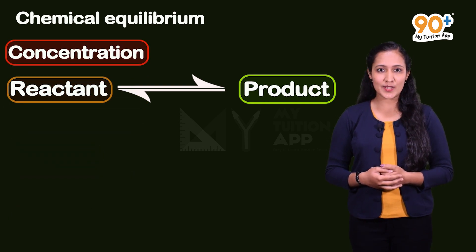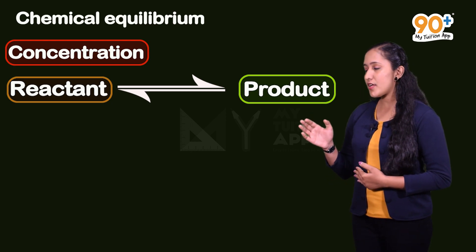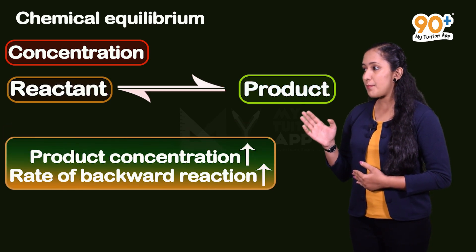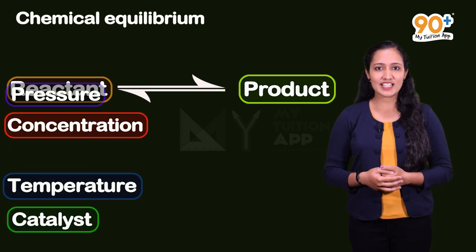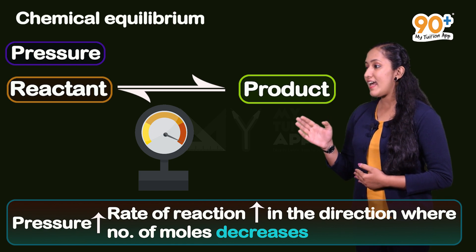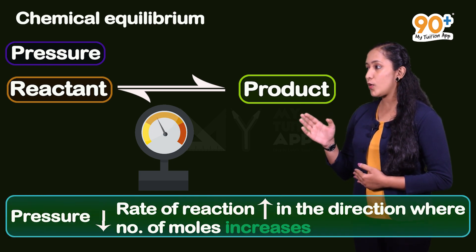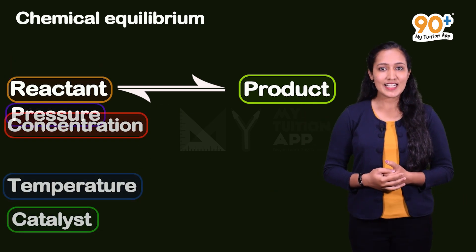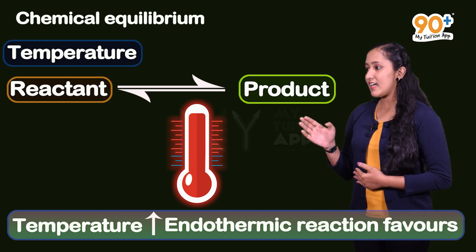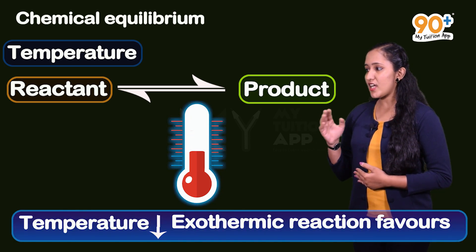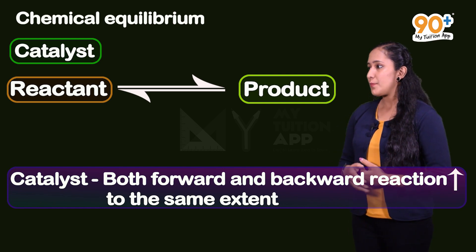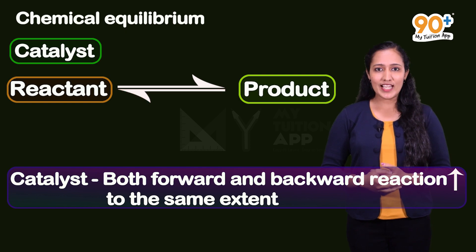Regarding concentration: when the concentration of reactants is increased, the forward reaction rate increases. When the concentration of products increases, the backward reaction rate increases. Regarding pressure: when a catalyst is used, it increases the rate of both the forward and backward reactions equally.